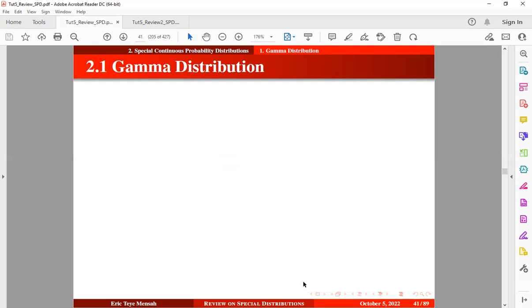Alright, so the second session in this review is on special continuous probability distributions. We want to begin with a gamma distribution as a subsession.